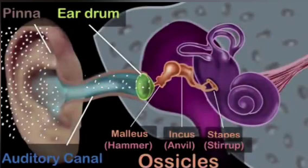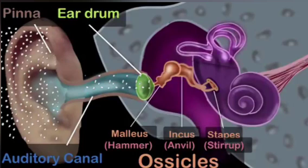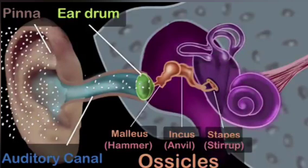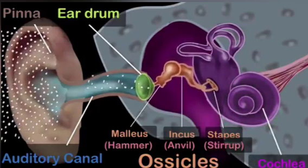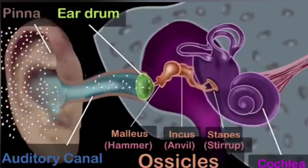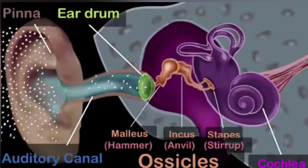That brings us to the inner ear. The inner ear consists of a bony structure shown in purple. The top part has three semicircular rings that help us maintain our balance when walking or dancing — they're not involved in hearing. The part involved in hearing is this snail-like structure called the cochlea. Although these bones have already started dancing to the music, nothing gets heard until these vibrations are converted to electricity and sent to our brain — and that's exactly what the cochlea does.